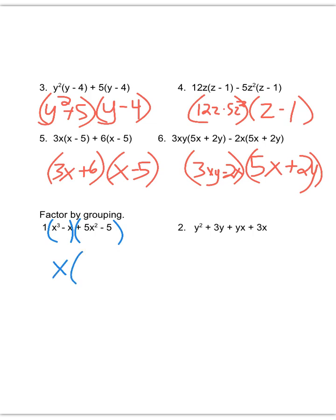You have 1, you need 3, so you need 2 more. Plus, what can you factor out of 5x squared and 5? You can take out a 5, and you're left with x squared minus 1.